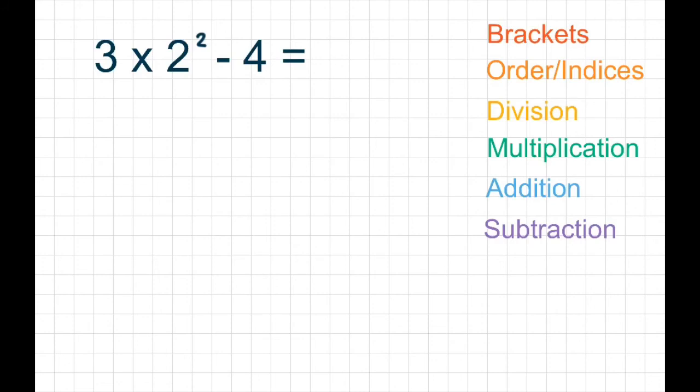In example number 4, we've got a few different symbols in here. So we need to go right through our list. We don't have any brackets. We do have some orders or indices. That's this little 2 that's sitting above the other 2. And that means we need to square this number. So we need to do that first. 2 squared is like saying 2 times 2. So 2 times 2 is 4. Our new sum would be 3 times 4 take away 4.